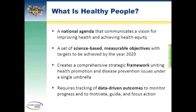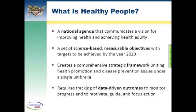Healthy People has created a comprehensive strategic framework uniting health promotion and disease prevention issues under a single umbrella. It's a framework that has been mirrored at different levels of government, whether at the federal, state, or community level. Businesses have framed their health plans around the Healthy People objectives. Within the federal government, it also serves to align and coordinate various prevention initiatives. For example, Healthy People helps to align the Affordable Care Act's national prevention strategy. Within sister agencies, the Centers for Disease Control and Prevention's winnable battles efforts are included, and healthcare-associated infections is one of those winnable battles.